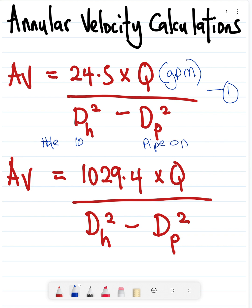So once you do that you have annular velocity. The difference here is that this second equation uses barrels per minute. Now I use this first one a lot because your flow rate is usually given in gallons per minute.